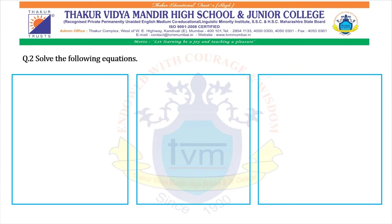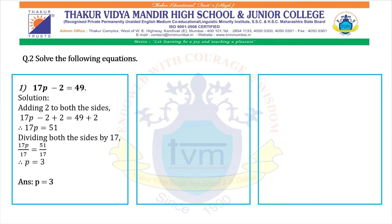Question 2: Solve the following equations. First: 17p minus 2 equals 49. Adding 2 to both sides: 17p minus 2 plus 2 equals 49 plus 2. The minus 2 and plus 2 cancel, giving 17p equals 51. Now dividing both sides by 17: 17p upon 17 equals 51 upon 17. The 17s cancel. Therefore p equals 3.